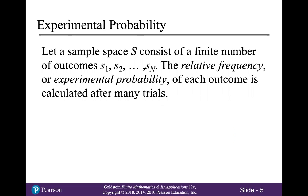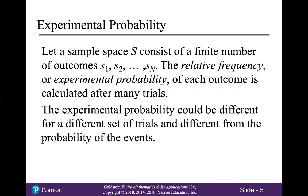Let a sample space S consist of a finite number of outcomes S1, S2, all the way up to S sub n. The relative frequency, or experimental probability, of each outcome is calculated after many trials. The experimental probability could be different for a different set of trials and different from the probability of the events.